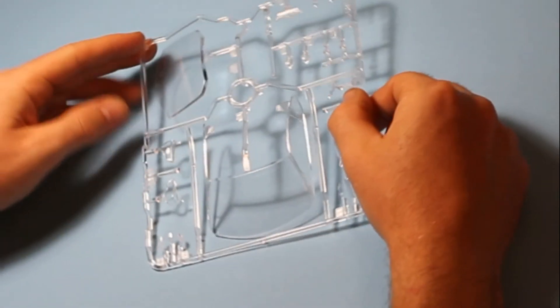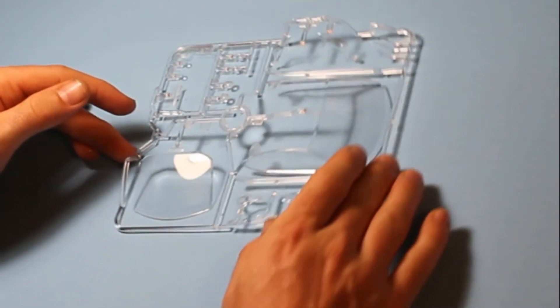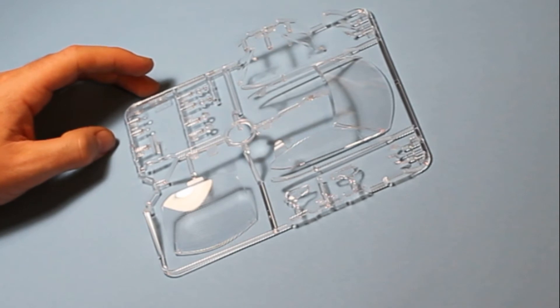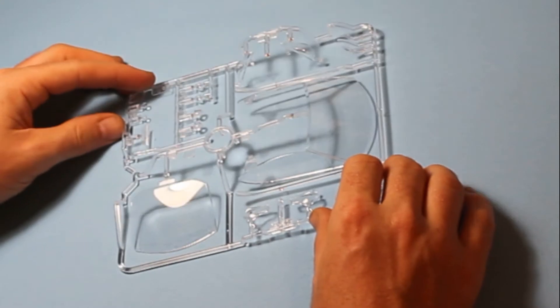Then we've got the clear parts, which is kind of the main event of this kit. Obviously you need these to be very clear because it's very much a focal point of the car once it's finished. So they want to be super clear and they're all on one sprue and there's absolutely no problem with clarity there.